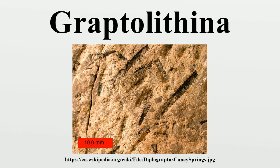Morphology. Each graptolite colony is known as a rhabdosome and has a variable number of branches originating from an initial individual. Each subsequent individual is housed within a tubular or cup-like structure. In some colonies there are two sizes of theca, and it has been suggested that this difference is due to sexual dimorphism. The number of branches and the arrangement of the thecae are important features in the identification of graptolite fossils. Their general shape has been compared with that of a hacksaw blade.